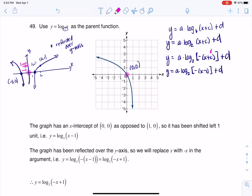I also have a reflection over the y-axis. But I'm getting closer. If I could figure out what A and D are, I would be done. Now just to simplify this a little bit more, I'm going to distribute that negative in my argument. So I'm looking at y equaling A times log base 2 of negative X plus 1 plus D.